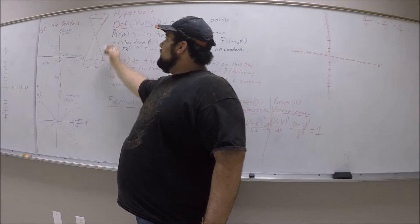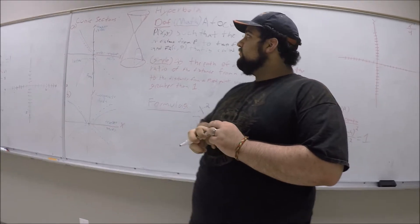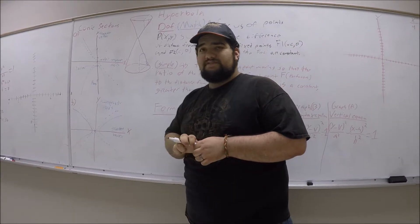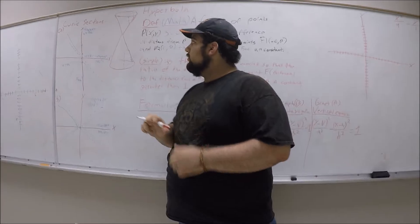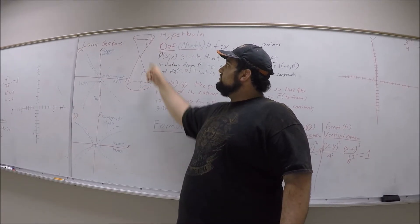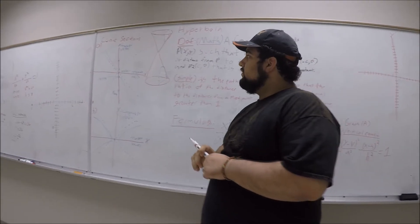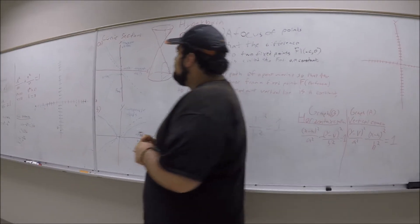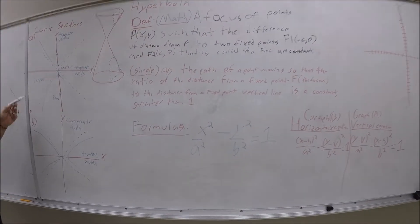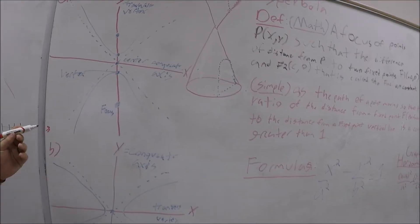The formulas for an ellipse are: x squared over a squared plus y squared over b squared equals 1; and x squared over b squared plus y squared over a squared equals 1. The foci formula is c squared equals a squared minus b squared. Now, how could you graph this?